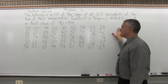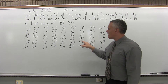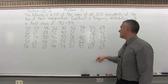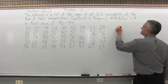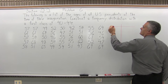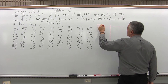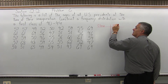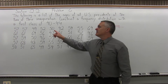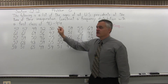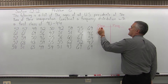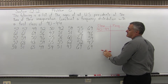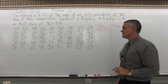Looking through the data, it looks like there were two people elected who were 69 when they were inaugurated. When they say frequency distribution, we're going to have a chart with two columns. The first column we can call 'class' or 'age at inauguration,' and the second column will be frequency. The direction said to start with a first class of 40 to 44, and I'll keep listing classes until I get up far enough to accommodate my oldest president.